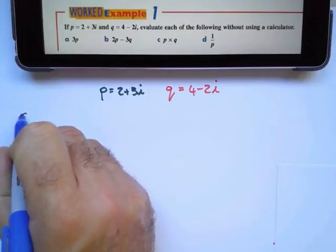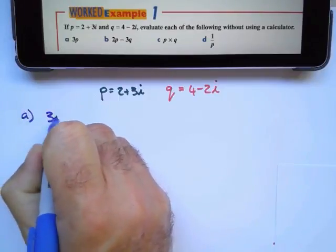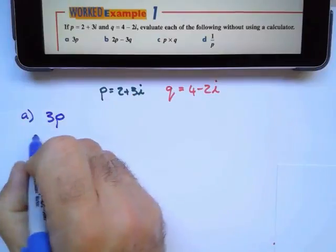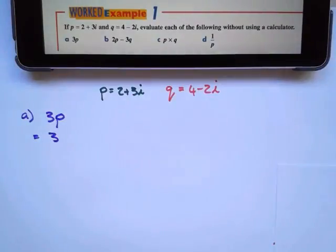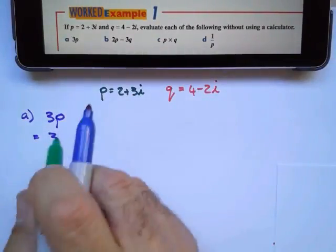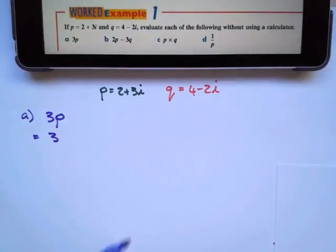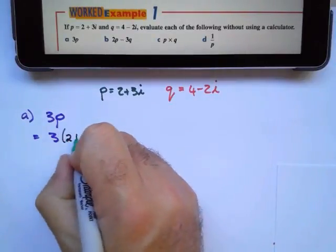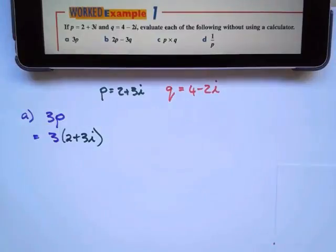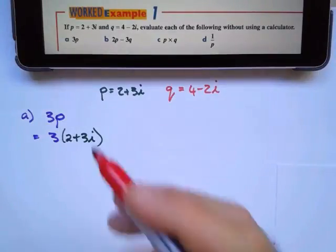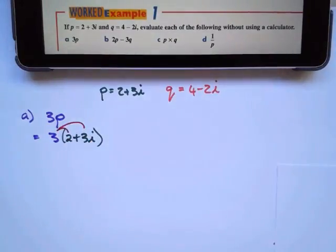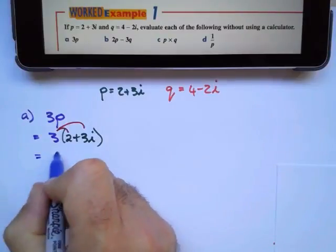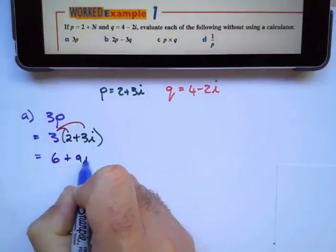In part a, they ask us 3 times p. So all we're going to do is substitute p in there. So 3 times 2 plus 3i, and I'll then expand my brackets using the distributive law and I'll find 3 times 2 is 6 plus 9i.